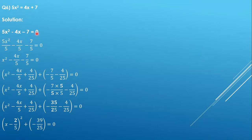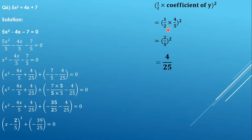Now, the coefficient of x² is not 1, so we have to make the coefficient of x² equal to 1. For that we multiply throughout by 5, giving us x² - (4x/5) - 7/5. We then apply the formula: half into the coefficient of x, the whole squared. The coefficient of x is 4/5, so half of 4/5 is 2/5, and (2/5)² = 4/25. We will add and subtract 4/25 in the equation.